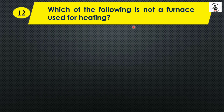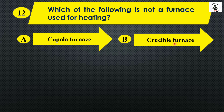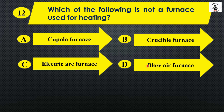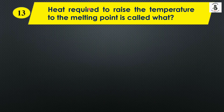Question twelve: Which of the following is not a furnace used for heating? Option A: Cupola furnace, Option B: Crucible furnace, Option C: Electric arc furnace, Option D: Blow air furnace. Among the options, cupola, crucible, and electric arc furnaces are regularly used for heating. Blow air furnace is not a type of furnace used for heating. The right answer is Option D: Blow air furnace.